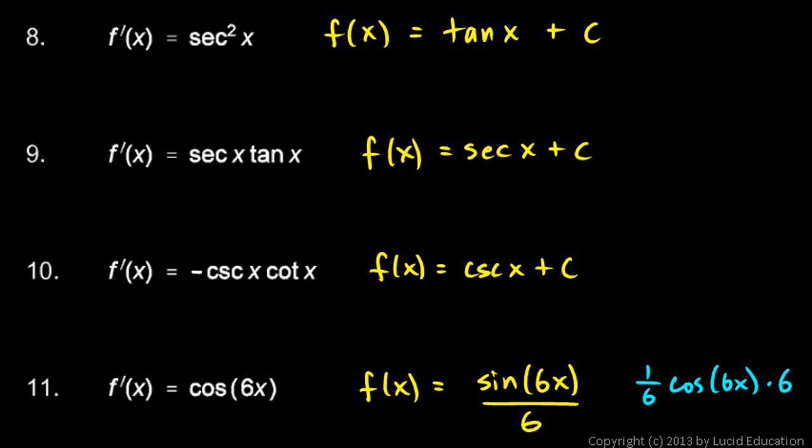And then those sixes obviously cancel out, leaving us with cosine of 6x, which is what we wanted. So f of x has to be sine 6x over 6 plus c.